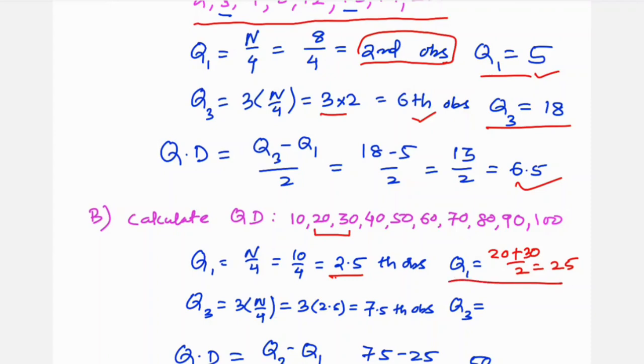Q3 is 3 into n by 4, so 3 into 2.5 equals 7.5. Taking 7th and 8th observations, if 7th is 70 and 8th is 80, then 70 plus 80 by 2 equals 75. So Q3 equals 75 and Q1 equals 25. Quartile deviation is Q3 minus Q1 by 2, so 75 minus 25 by 2 equals 50 by 2 equals 25. So 25 is the quartile deviation.